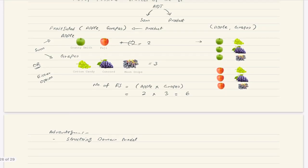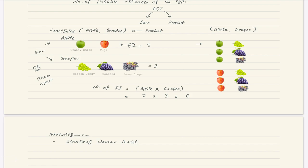Just like in our example — we were making a fruit salad which should have apple and grapes. We made a type for apple (either Granny Smith or Fuji), similarly for grapes, and then we composed them together to make our domain model. That domain model created by ADTs becomes a single platform where domain experts and developers can talk, and it makes complete sense for both of them. That's a big benefit of using ADTs in structuring your domain model.